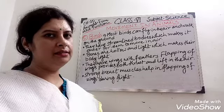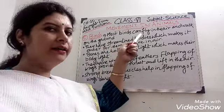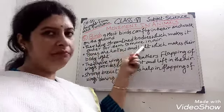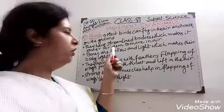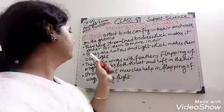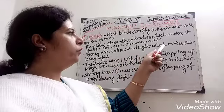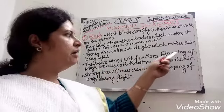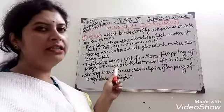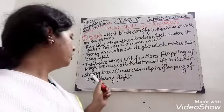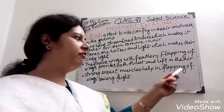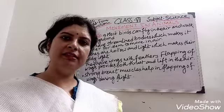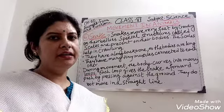Our fifth animal is birds. Most birds can fly in the air and walk on the ground. They have streamlined bodies which make it easier for them to move in air. Their bones are hollow and light, making their body light. They have wings with feathers. Flapping of wings provides both thrust and lift in the air. Strong breast muscles help in flapping of wings during flight.